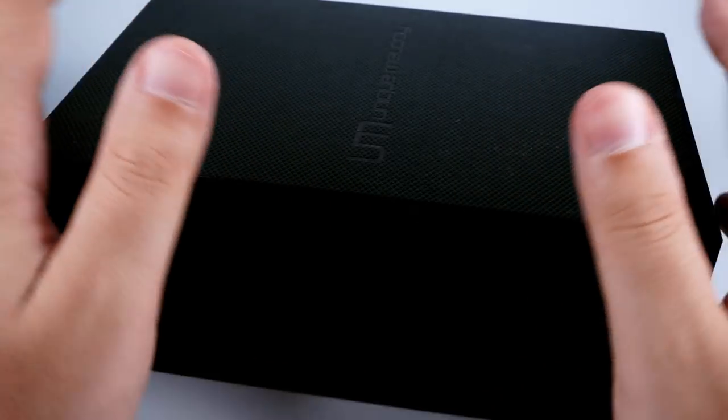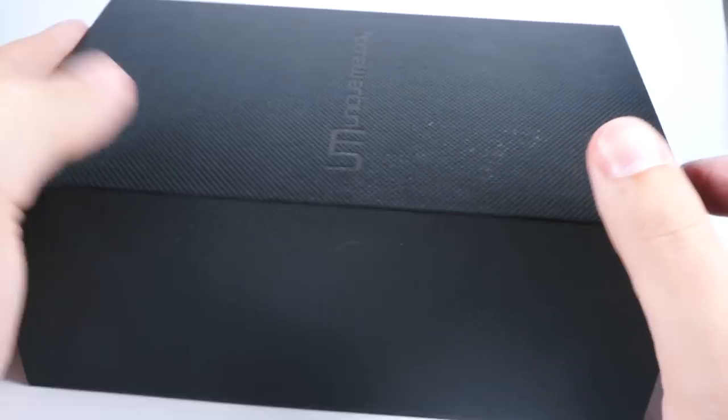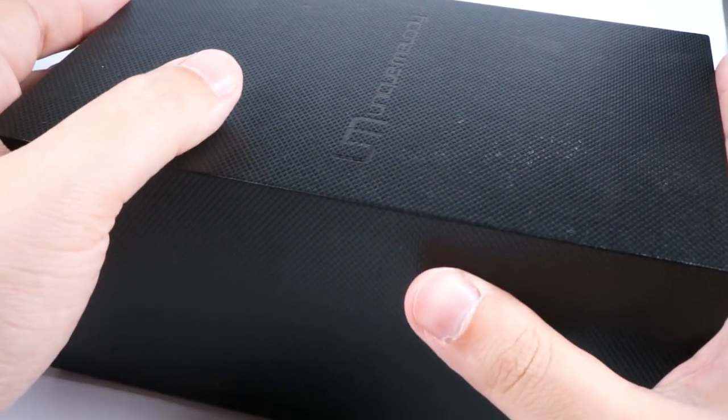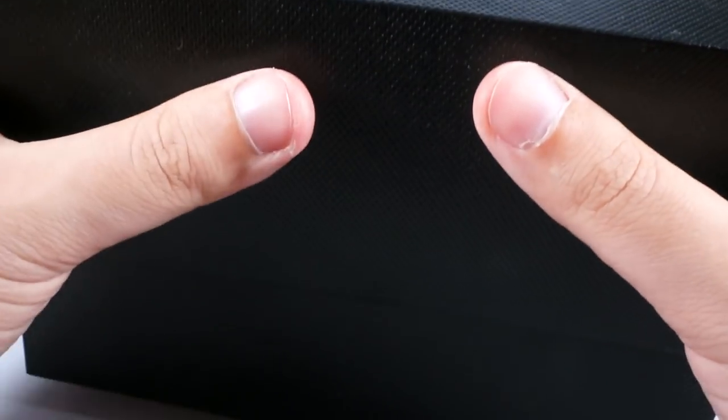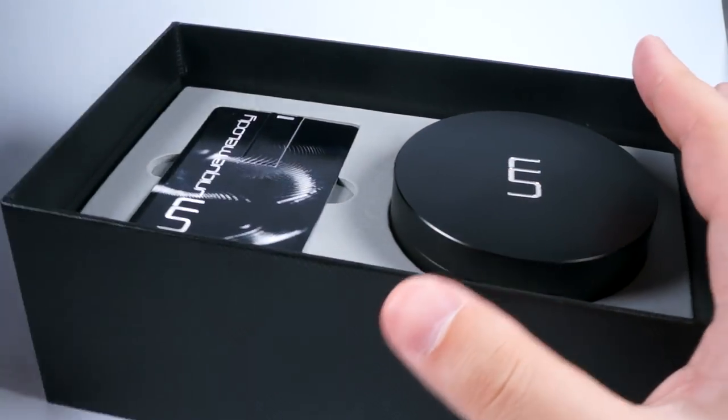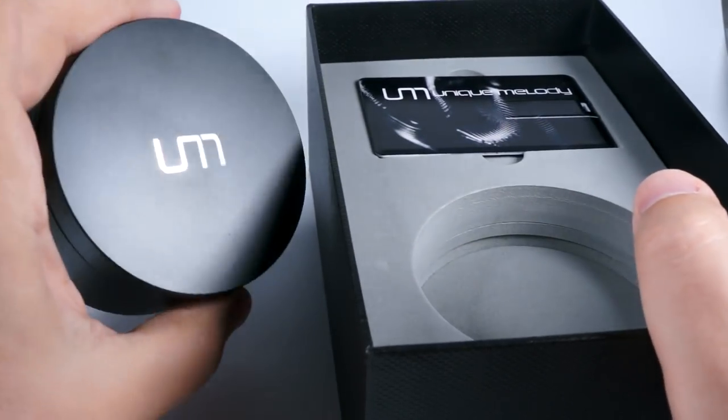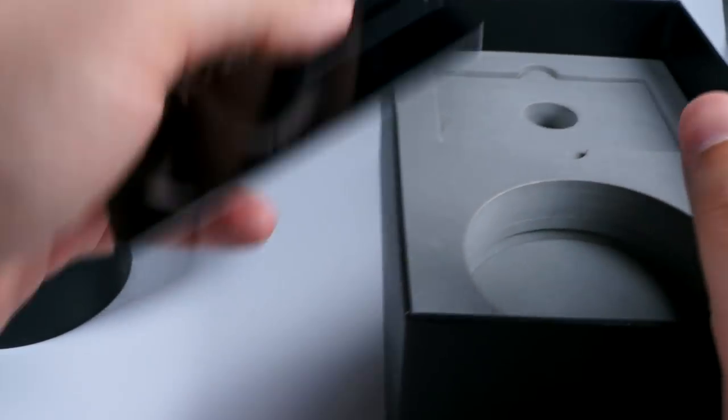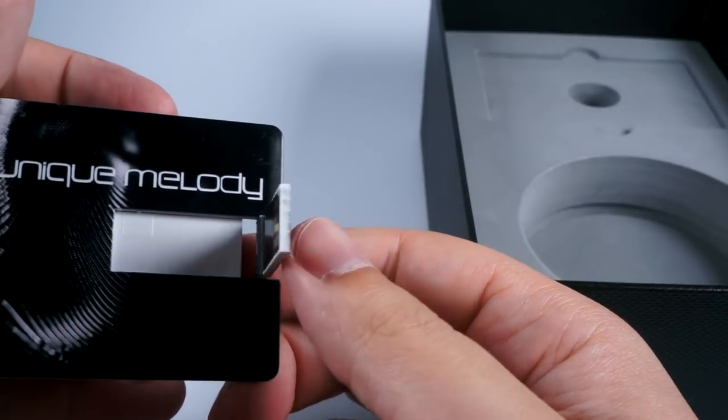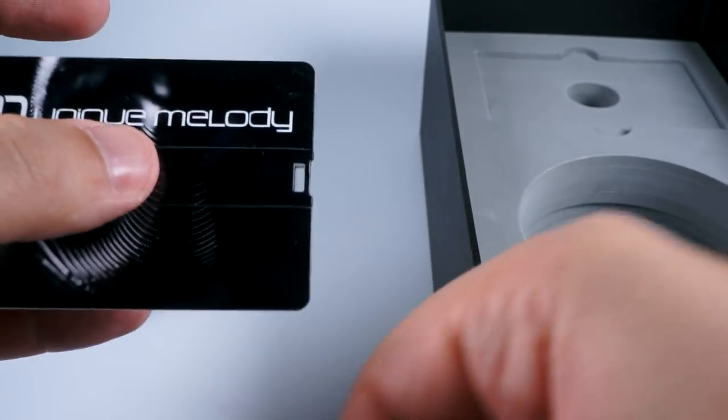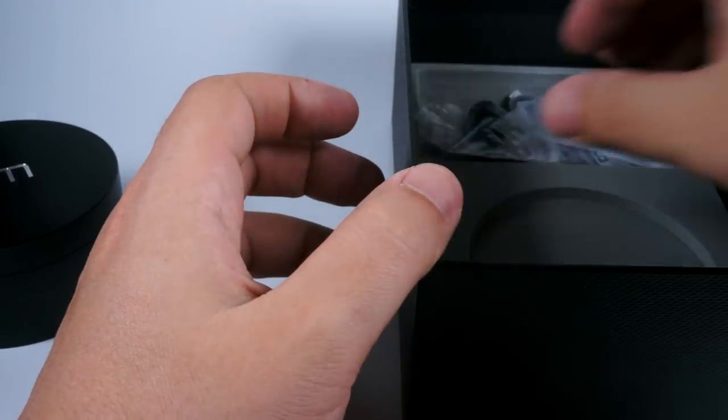So let's take a closer look at these IEMs. This outer box is relatively simple, it's a black cardboard box with pleasant texture and just a company logo printed here. So when you open it, first thing that you will see is a plush case for storing IEMs themselves and a card with serial number. Actually, it's also a USB flash with additional information about these IEMs.